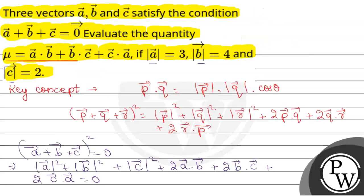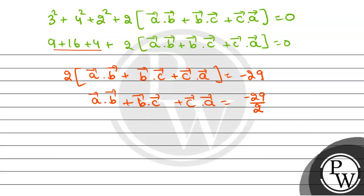Now, this is the value of nu. So we replace it: nu is equal to minus 29 divided by 2. This is our final answer. I hope the concept is clear. Thank you.